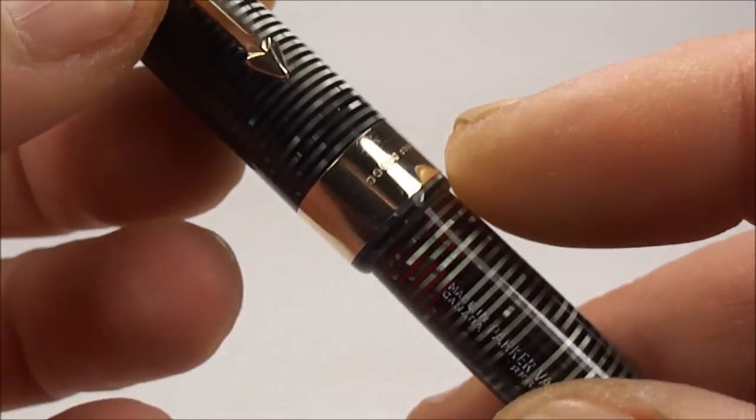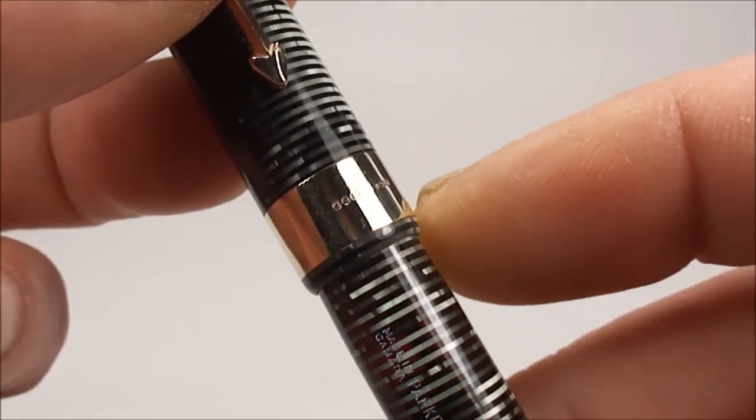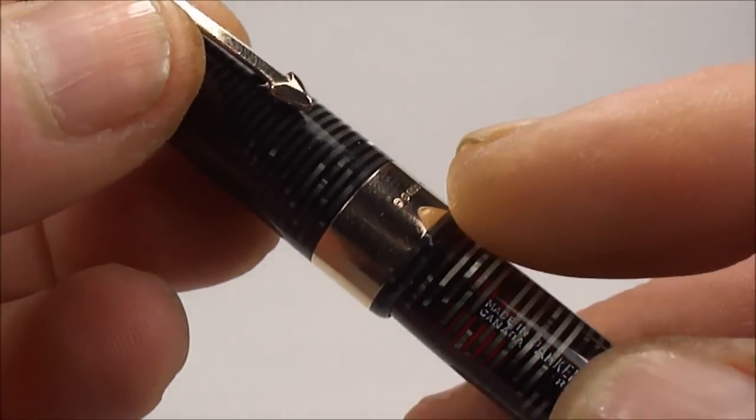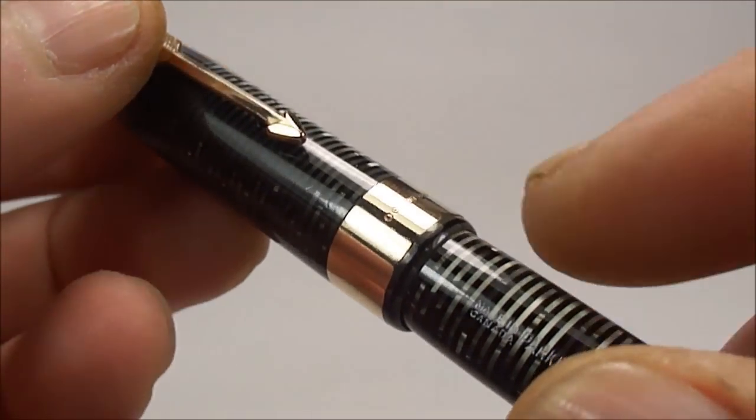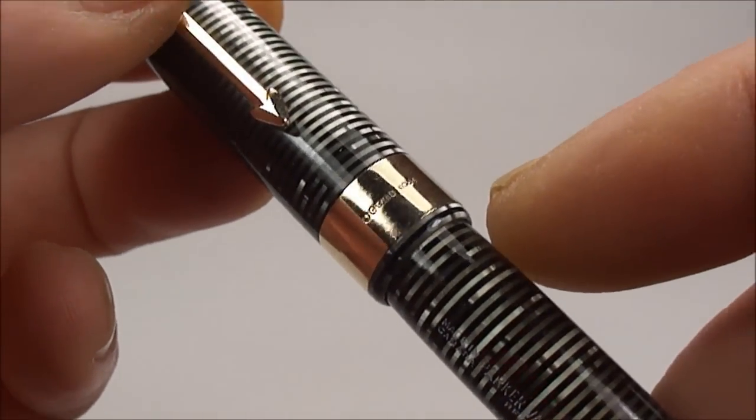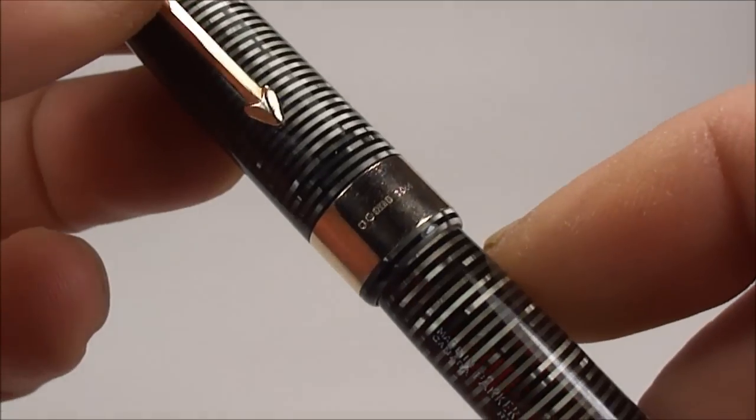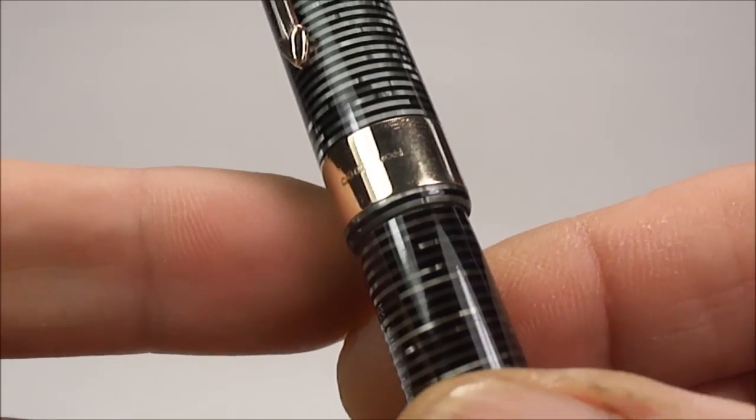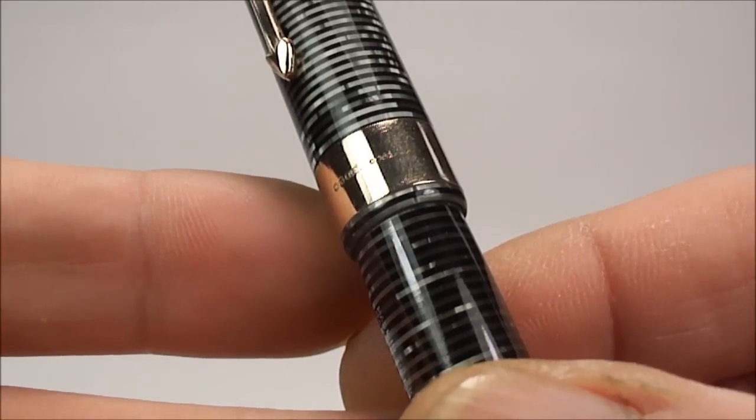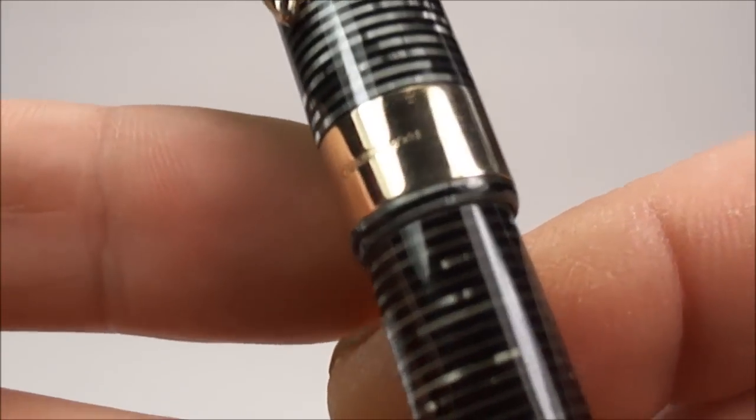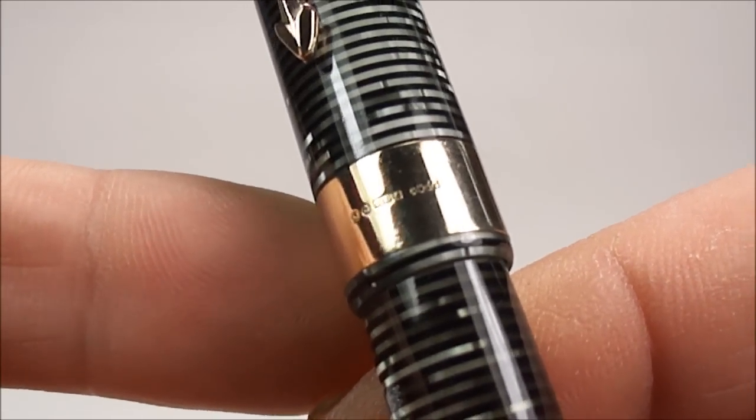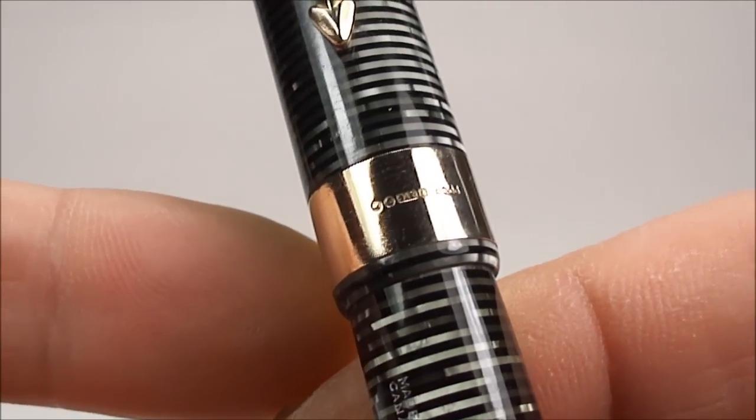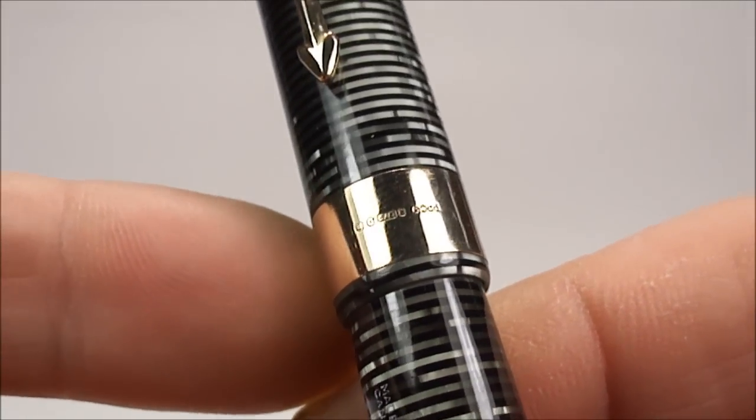Now again if we go to the cap band here, again the different variants had different cap bands, some of them had double bands, some of them had three bands, some were slightly wider, some were thinner. Now this particular band on this particular model is what they term as the jeweller's band. And I'm hoping you can actually see, on this particular one, the band is actually nine carat gold.